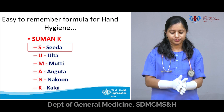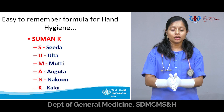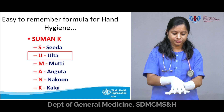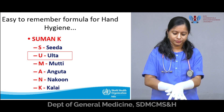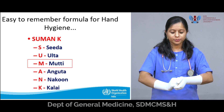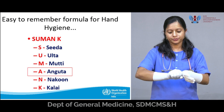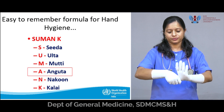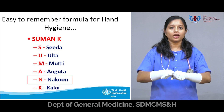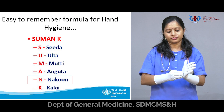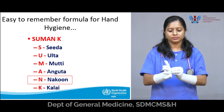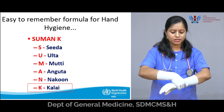Now let us see the steps of hand washing. There are 6 simple steps of hand washing which can be easily remembered using the acronym SUMANK. S is for SIDHA, U is for ULTA, M is for MUTTI, A is for ANGOTA, N is for NAKHUN, and K is for KALAI, that is RIST.